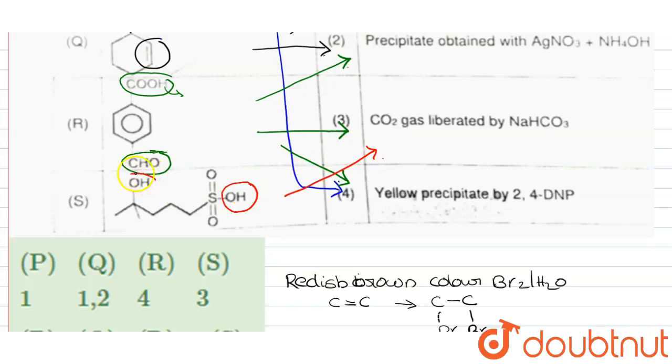But we can see an alcoholic group here, but it does not give positive test with the AgNO3 plus NH4OH because this is a tertiary alcohol and the acidity of this hydrogen is very low. So this is matched with 3 only.